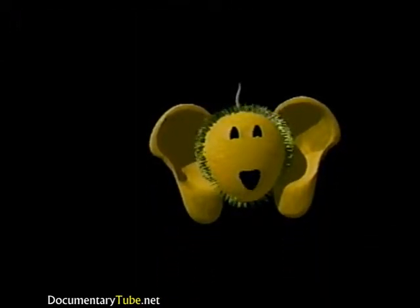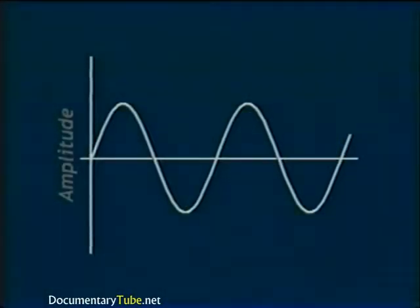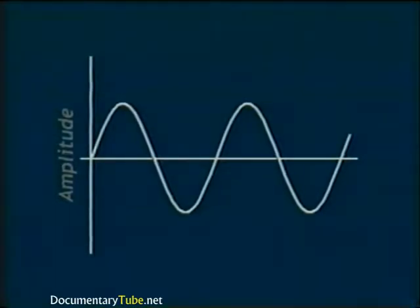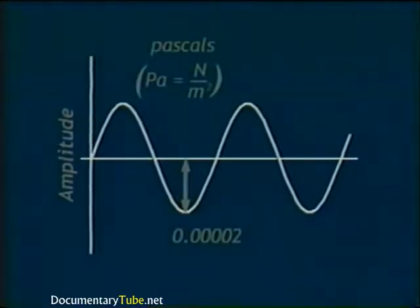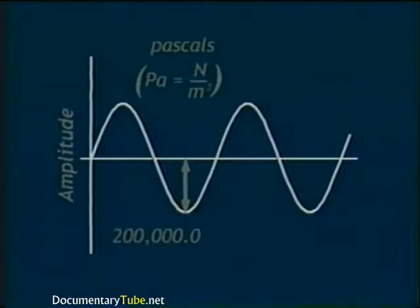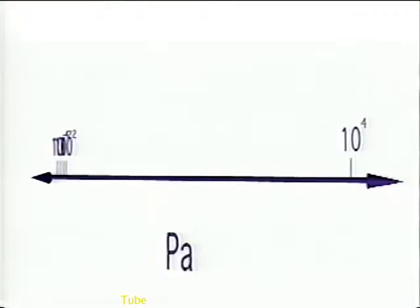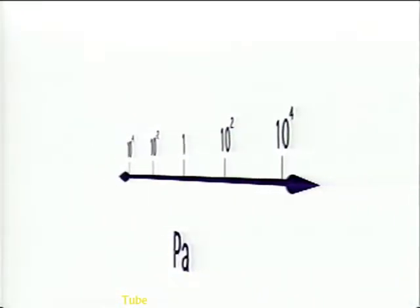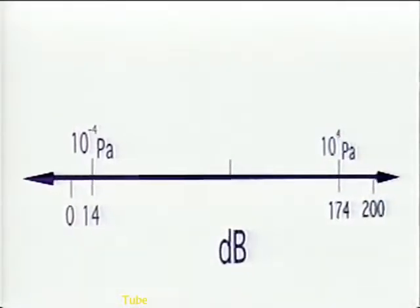A better understanding of noise involves quantifying its perception. Physical measurements of the strength of the wave are explained first, followed by perceptual measurements. The amplitude of a sound wave can be quantified by measuring the associated pressure disturbance — the change in pressure from its ambient value, termed the acoustic pressure. Sound can be represented in terms of a physical unit of pressure: pascals, abbreviated Pa, widely used in the acoustics community. Because of the wide range of amplitudes encountered, it has become convenient to plot pressure data on the more compact logarithmic scale, where the unit is the decibel, abbreviated dB, and instead of acoustic pressure, you plot the sound pressure level.